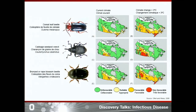On the left set of maps you see the current states in which the beetles are capable of infecting agricultural crops; on the right set of maps in red you see the expansion of very favorable environments in which the beetles would be capable of causing yield loss. It is a global issue.